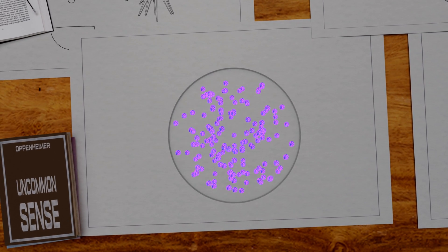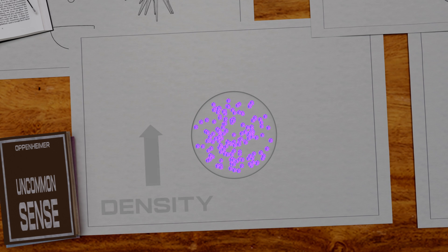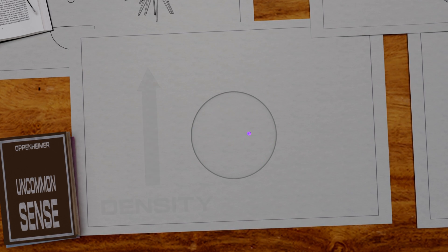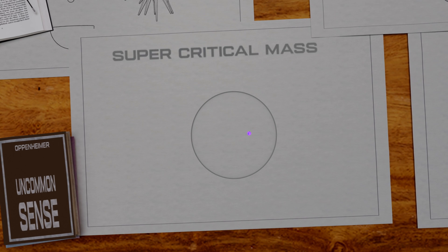To prevent this, the atoms should be brought closer to each other, or in other terms, the density should be increased. Now the chain reaction can sustain itself, and plutonium is said to be at supercritical mass.